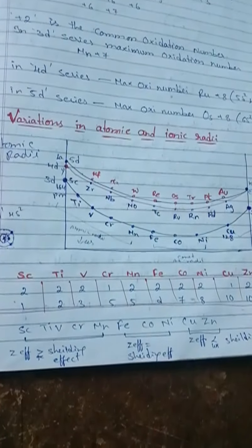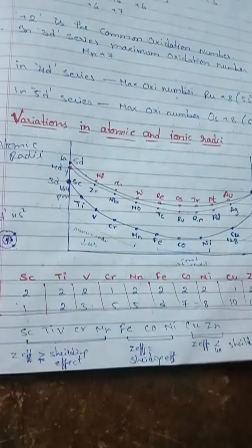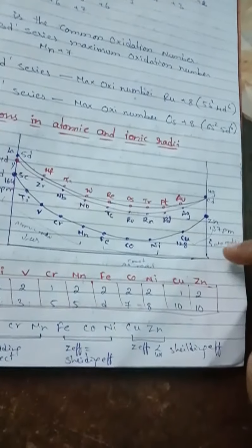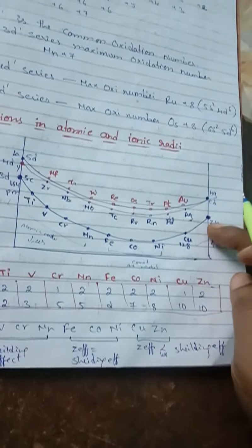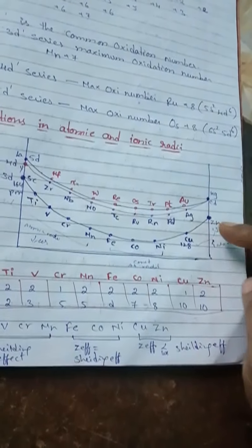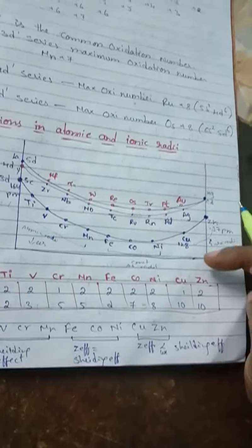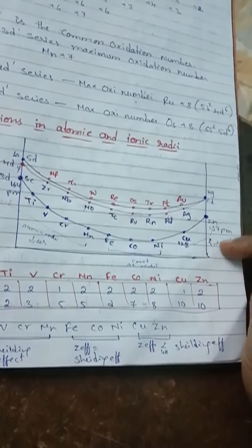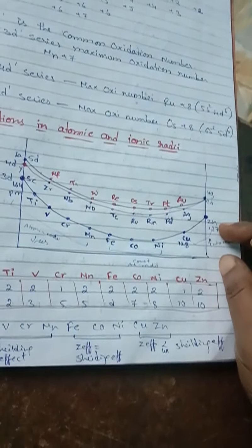From iron to nickel, the nuclear charge is almost equal to the shielding effect. When we move to the last elements, copper and zinc, the atomic radii is going to increase.